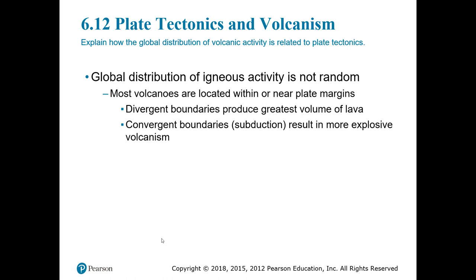The last section for chapter 6 is really a review of the connection between plate tectonics and volcanic activity — a reminder that volcanic activity is not random, and that most volcanoes are located within or near plate boundaries or margins. Divergent plate boundaries — like the Mid-Atlantic Ridge — are areas where plates move apart, new magma rises up from the mantle, solidifies at the surface, and pushes the plates apart. Interestingly, most of the volume of lava erupted is actually happening at those divergent plate boundaries, partly because they run like seams through the earth and cover an extensive area.